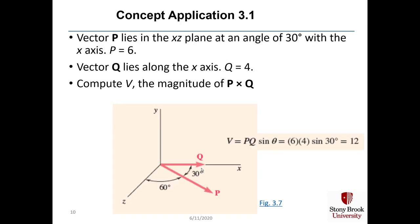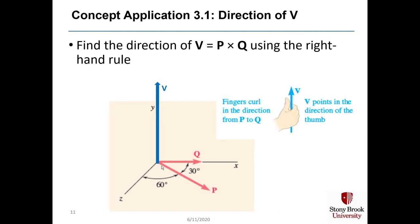Here's concept application 3.1: vector P lies in the xy-plane at 30 degrees from the x-axis with magnitude 6, and vector Q lies along the x-axis with magnitude 4. The angle between them is 30 degrees, so the magnitude of V equals 6 times 4 times sine 30°, which equals 12. Using the right-hand rule, we grab P and rotate it into Q, and our thumb points upward, showing the direction of V.